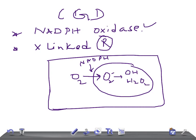There is another enzyme called myeloperoxidase, located in the lysosome. It acts on the hydrogen peroxide produced by NADPH oxidase, and together with chloride, forms hypochlorite — which is also microbicidal. So to kill an organism we need three things: hydroxyl radical, hydrogen peroxide, or hypochlorite.